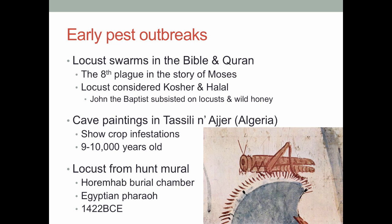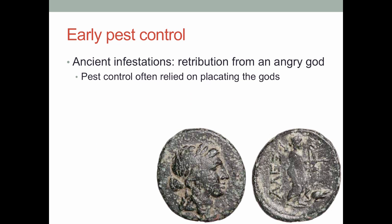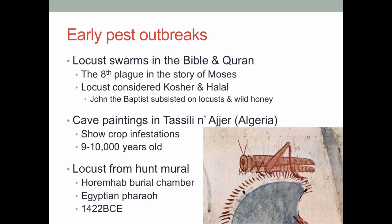This is actually a locust portrayed in a huge mural from Horemheb's burial chamber — he was an Egyptian pharaoh from about 1400 BCE, roughly 3,400 years ago.